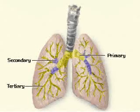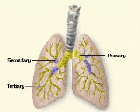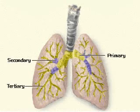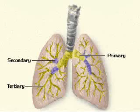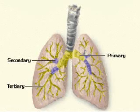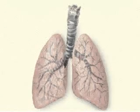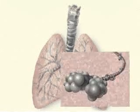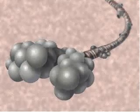Tertiary bronchi continue to branch into smaller tubes called bronchioles. Unlike the larger tubes, bronchioles do not contain cartilage and must rely on smooth muscle in their walls to keep these airways open. The smallest and final branch of bronchioles, called terminal bronchioles, end blindly into the alveolar sacs.